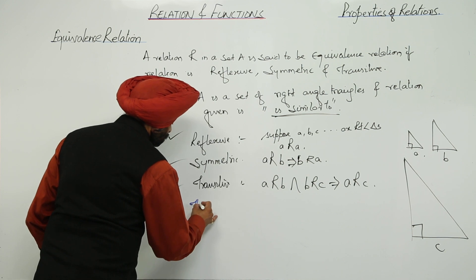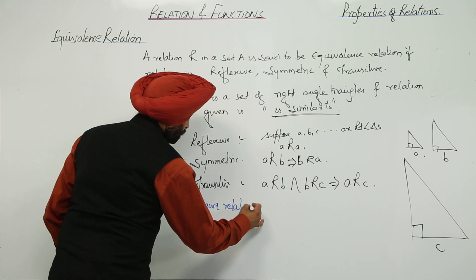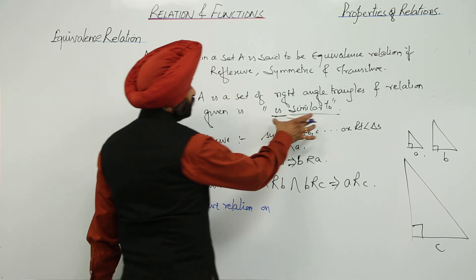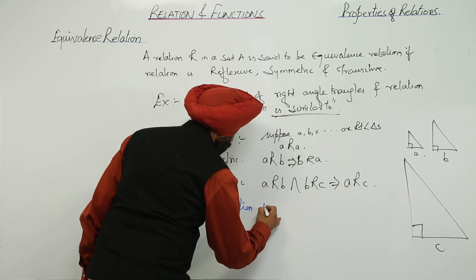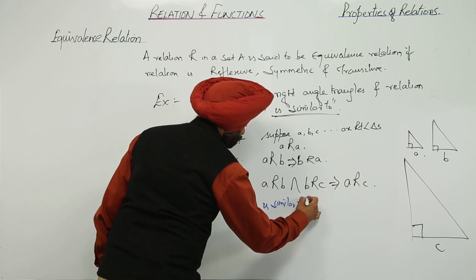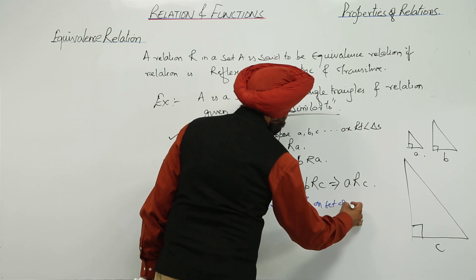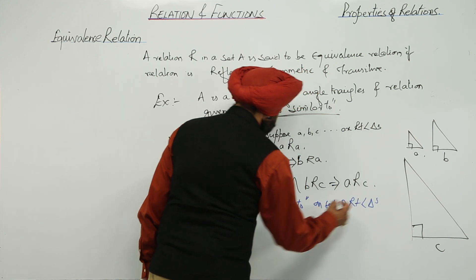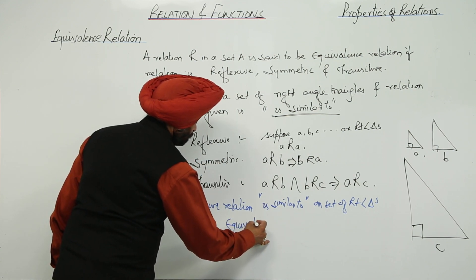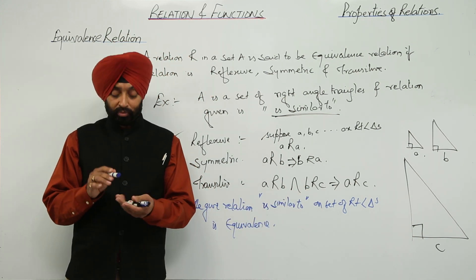So it means the given relation 'is similar to' on the set of right angle triangles is an equivalence relation. So this is about the equivalence relation and its properties.